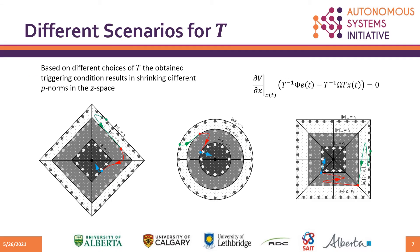Recall our proposed triggering condition — it has an unknown matrix T to be designed. Here we give a geometric interpretation of the closed-loop trajectories under three different scenarios for the matrix T. A new triggering is imposed whenever the trajectory's p-norm increases. As a result, our proposed condition defines constant p-norm level sets in the state space, so as long as the trajectory's p-norm is shrinking, no new triggering is required. The three pictures from left to right show the one-norm, two-norm, and infinity-norm forms of our triggering condition, obtained based on different values of matrix T.